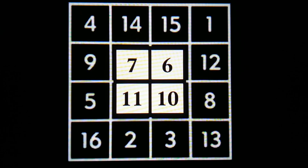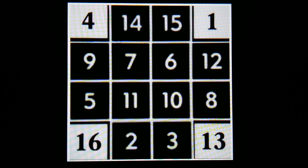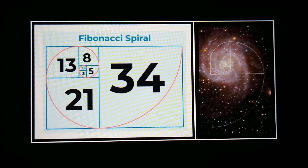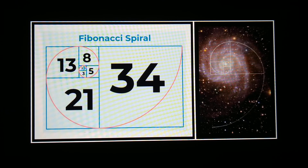There are other ways to get 34 as well. 34 is a Fibonacci number. For those unaware of Fibonacci numbers, I will leave a link in the description box. I'm also going to talk a little bit about composite numbers — not too many people are talking about composite numbers. But 34 is a Fibonacci number.